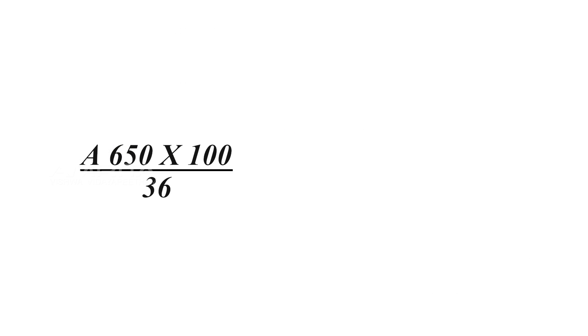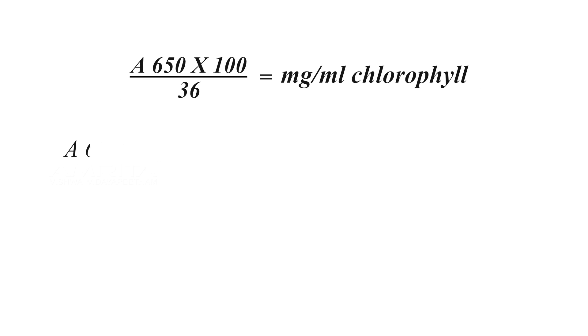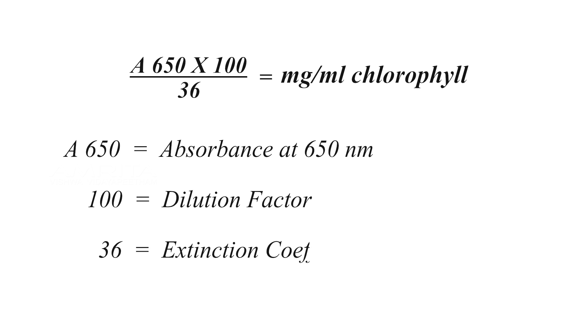Estimate the mg per ml chlorophyll concentration using the following formula: A650 × 100 / 36 = mg per ml chlorophyll, where A650 is the absorbance at 650 nm, 100 is the dilution factor, and 36 is the extinction coefficient of chlorophyll.